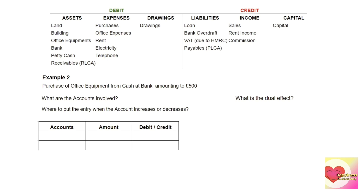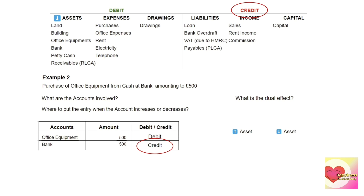Example two: purchase of office equipment from cash at bank amounting to 500. Accounts involved: office equipment and bank. The value of the new office equipment is 500, and 500 is deducted from the bank. Dual effect: office equipment increases and bank decreases — both are assets, so we have an increase in asset and a decrease in asset. When an asset increases it goes to debit; when an asset decreases it goes to the opposite side — credit.